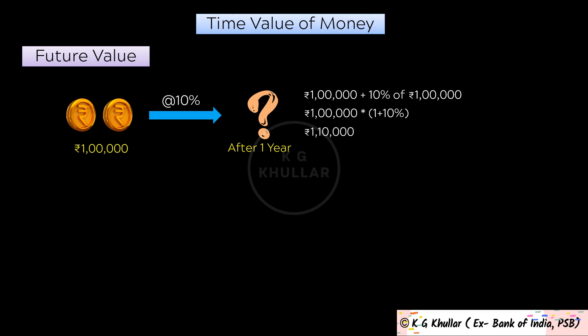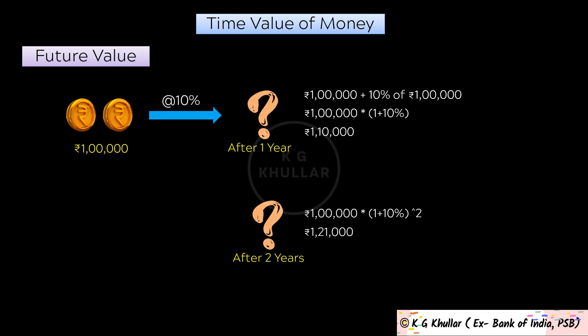Can you find the value of the same investment of Rs. 1 lakh after 2 years? It will simply be 1 lakh multiplied by 1 plus 10% raised to the power 2, and that will be Rs. 1 lakh 21,000. Like this you can find the future value of our investment after 3, 4, and any number of years.